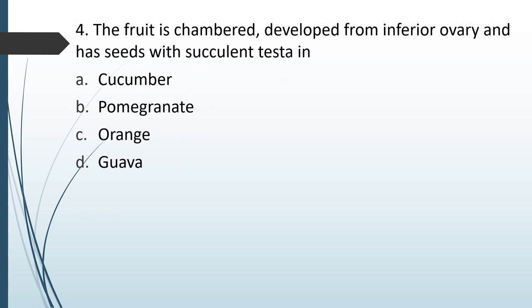The fruit is chambered, developed from inferior ovary and has seeds with succulent testa in: (A) cucumber; (B) pomegranate; (C) orange; (D) guava. The correct answer is option B — pomegranate.